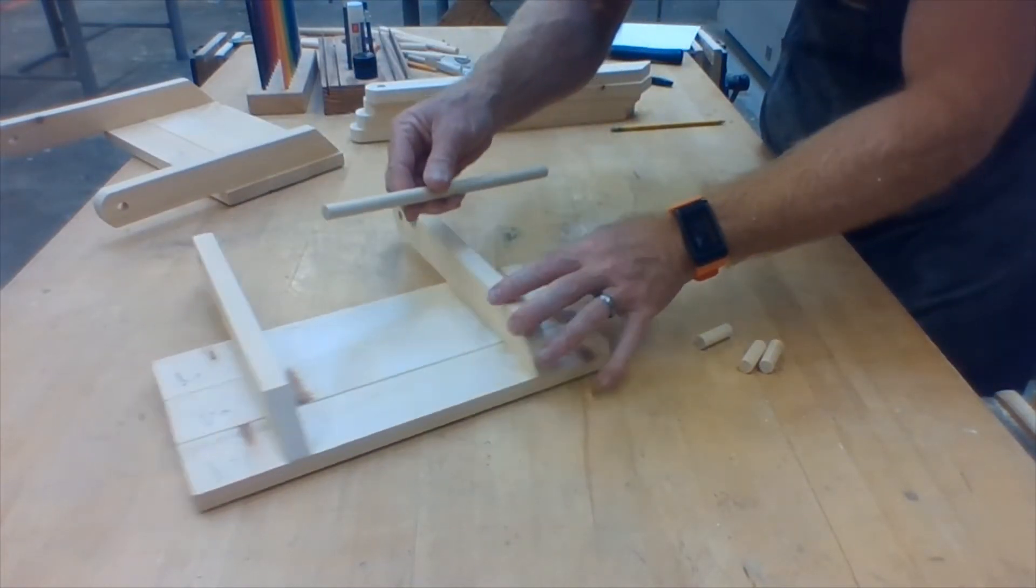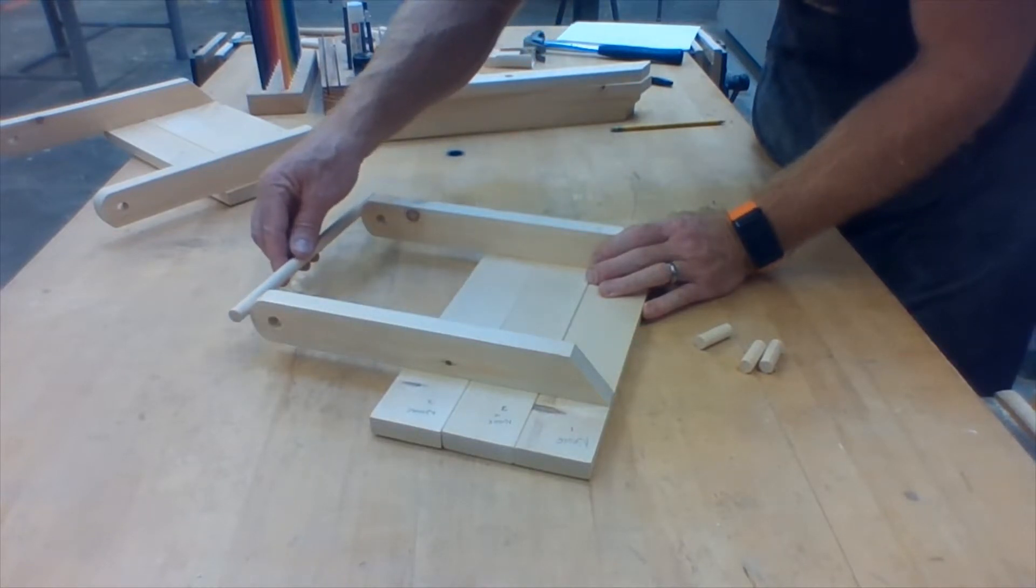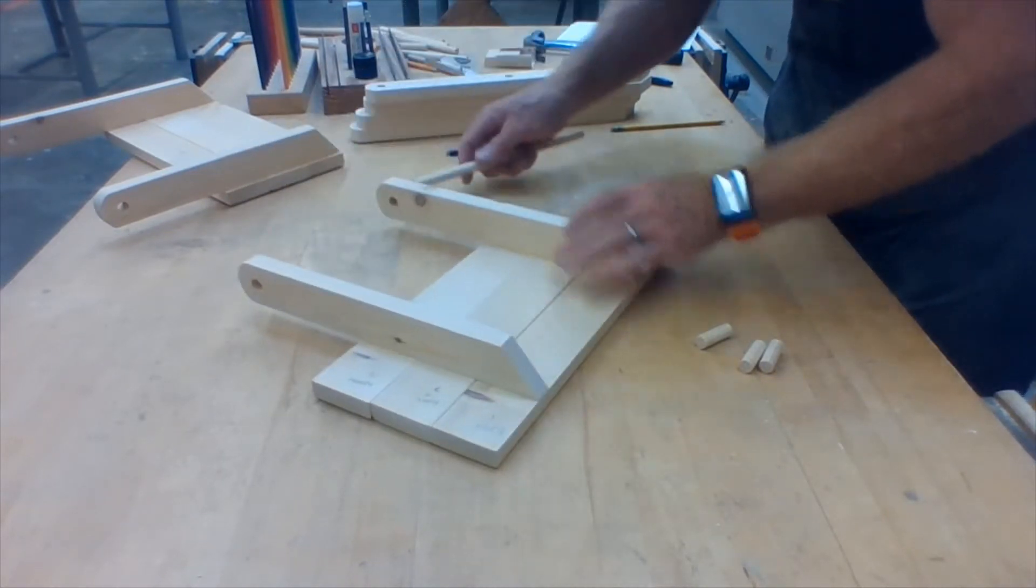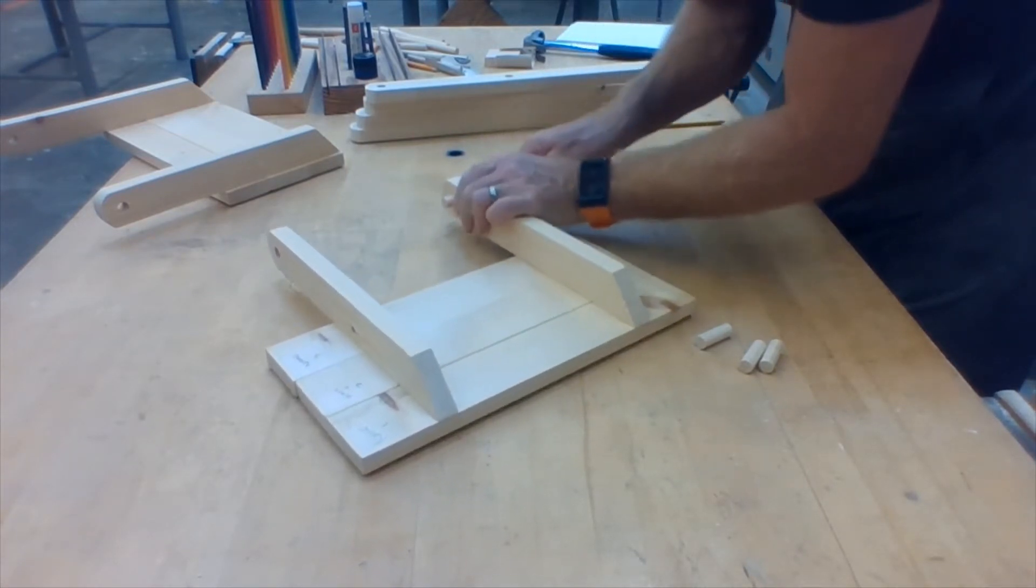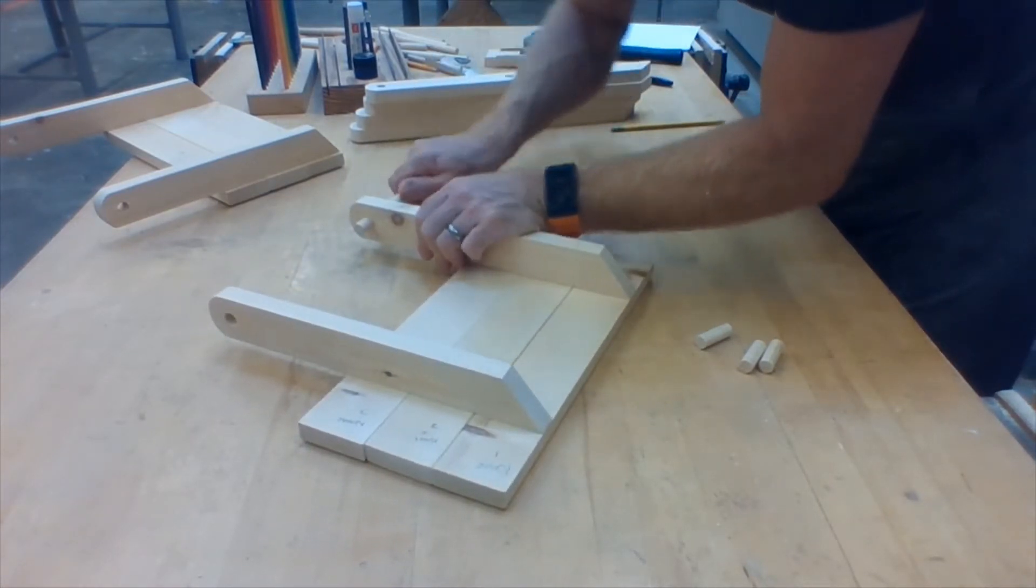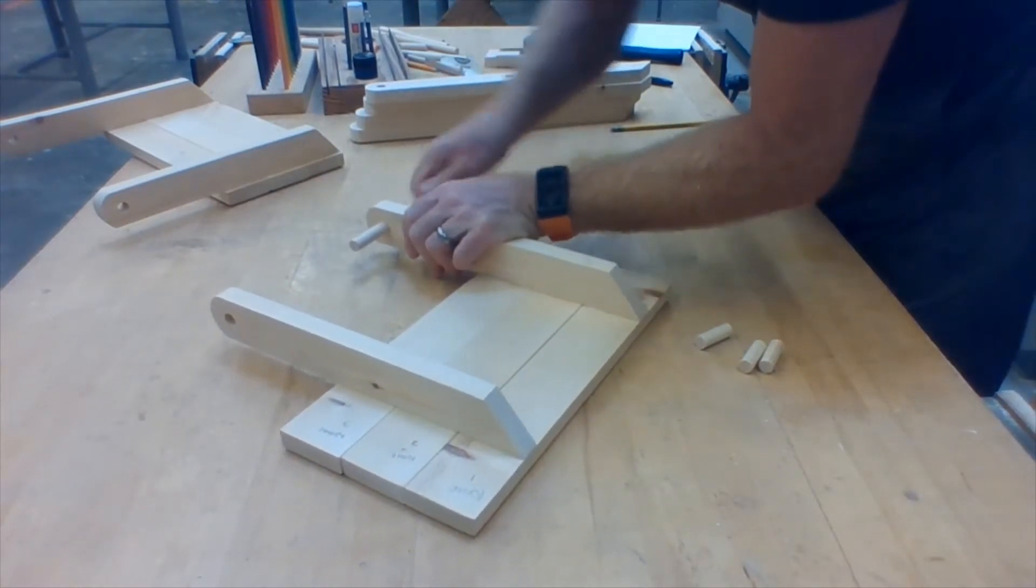You're going to take the long dowel and push it through one hole all the way through to the other hole on the other side. It should be a tight fit, which means you're going to have to fight with it to go through. A good way of doing that is to twist it and push it and just repeat that over and over again.